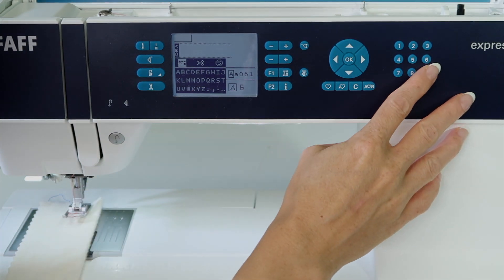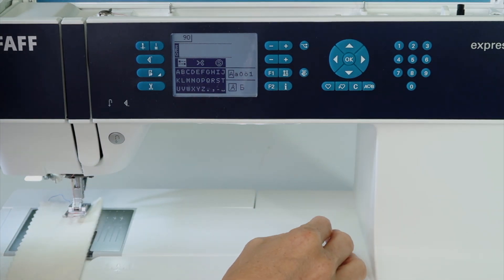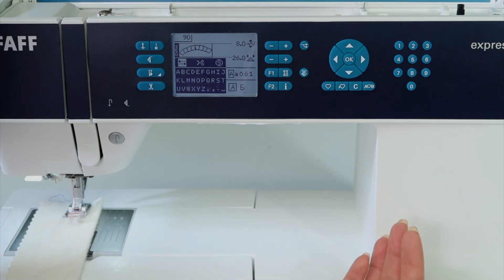But just by typing in a decorative stitch number, so if I type in stitch number 90, it will show that stitch on screen.